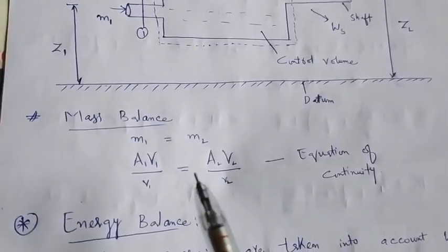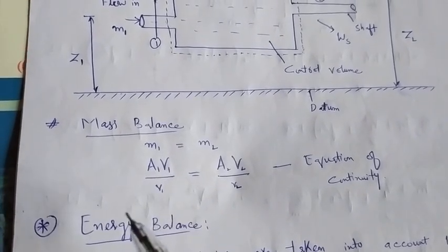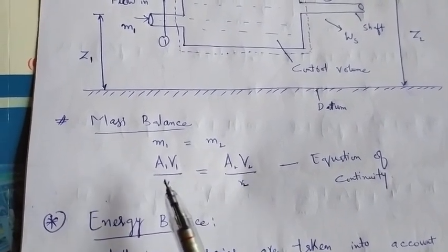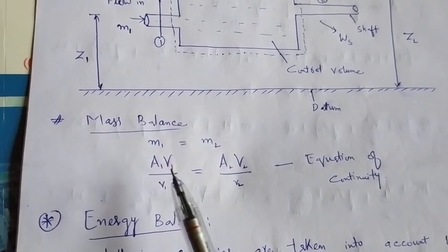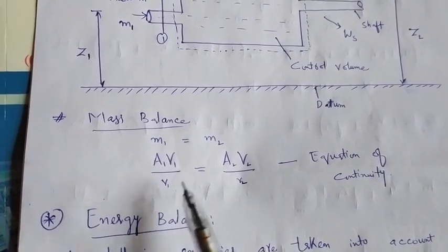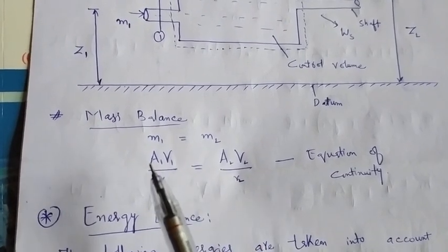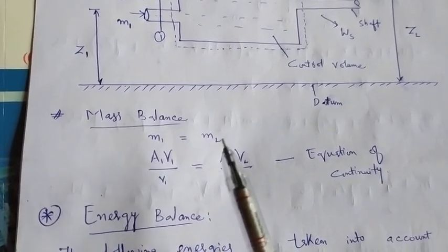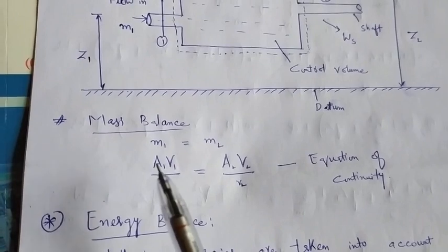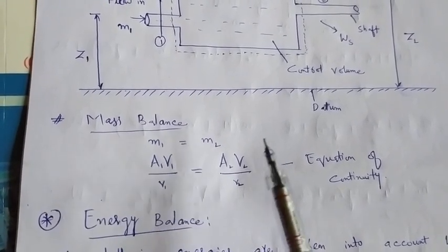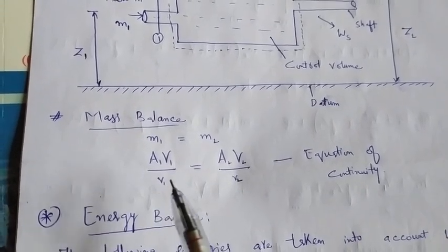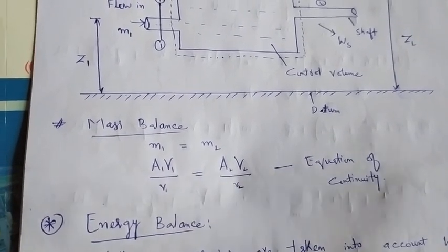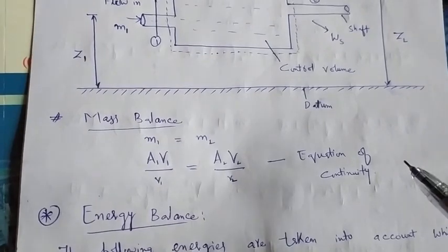We have already done the mass balance: mass entering the control volume equals mass leaving the control volume, or M1 equals M2. After finalizing the calculations we had the equation: A1·V1 / v1 = A2·V2 / v2, where A1 and A2 are the cross-sectional areas at inlet and outlet, V1 and V2 are the velocities of fluid at entrance and outlet, and small v1 and v2 are the specific volumes at entrance and exit. This equation is called the equation of continuity.